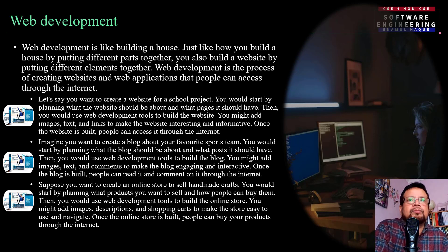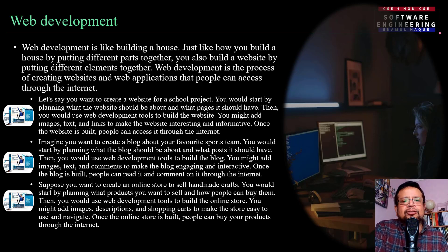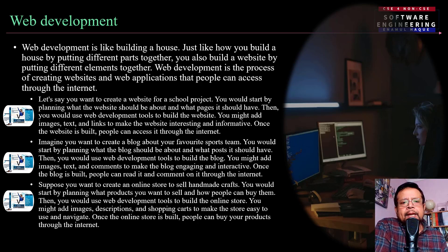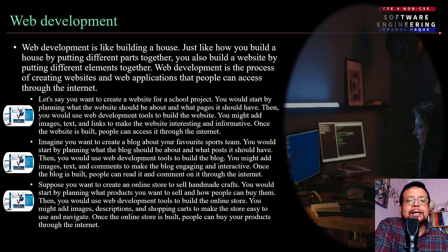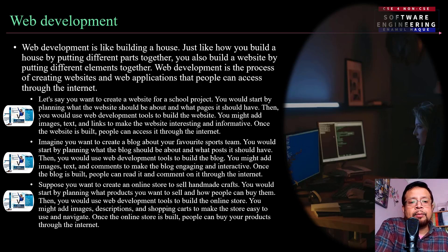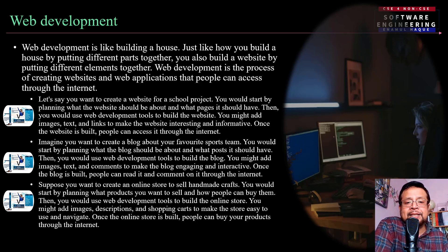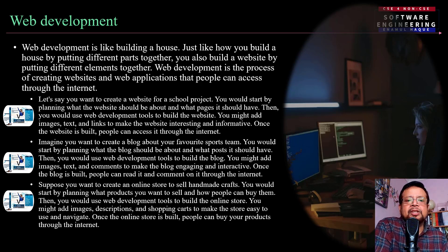For example, ChatGPT is a web application — it generates content through an interface in your browser. Let's say you want to create a website for a school project. You would start by planning what the website could talk about, how many pages there will be. Then you would use web development tools to build it — adding pictures, text, and links. Planning and organizing are key parts of web development.